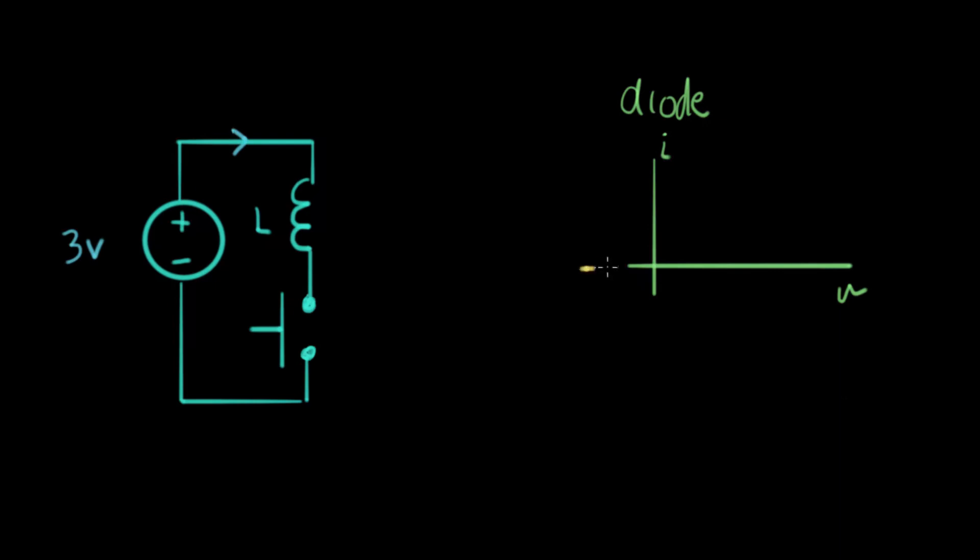And it looks like this. The current, I'm just going to sketch this. The current is zero when the voltage on the diode is negative. And somewhere around here the current goes up like that. So when we have a diode, this is the symbol for a diode, like that. And that's plus and minus V. And this is the current through the diode.